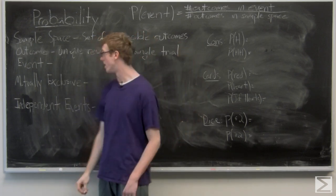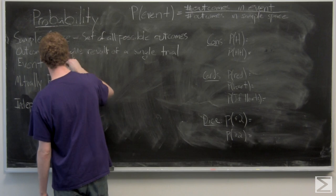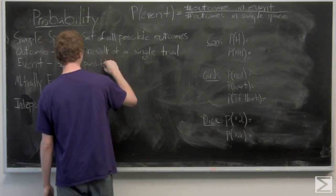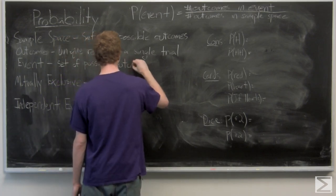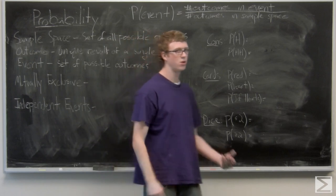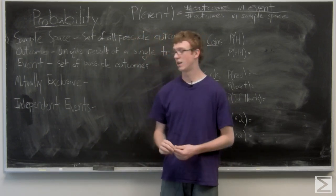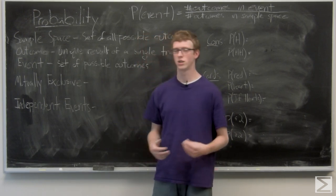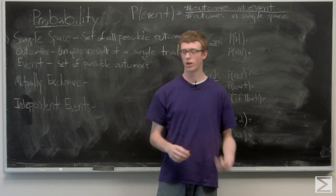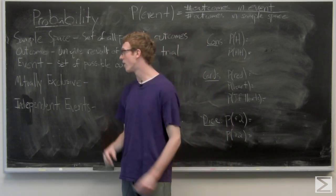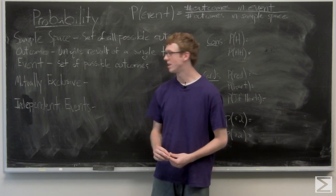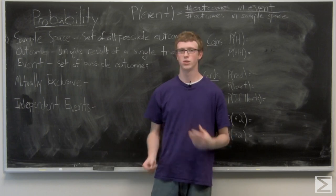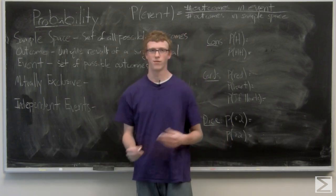And an event is a set of possible outcomes. So if we take a look at the roll of a dice, we can say that we roll a die twice. And the possible outcomes are, say you get a one on the first and a two on the second, or a two on the second and a one on the first. Those are both single unique outcomes. But we could say that an event is the probability, we could look for the probability of getting a one and a two. So it doesn't matter what the order is. So that's the difference between an event and an outcome.